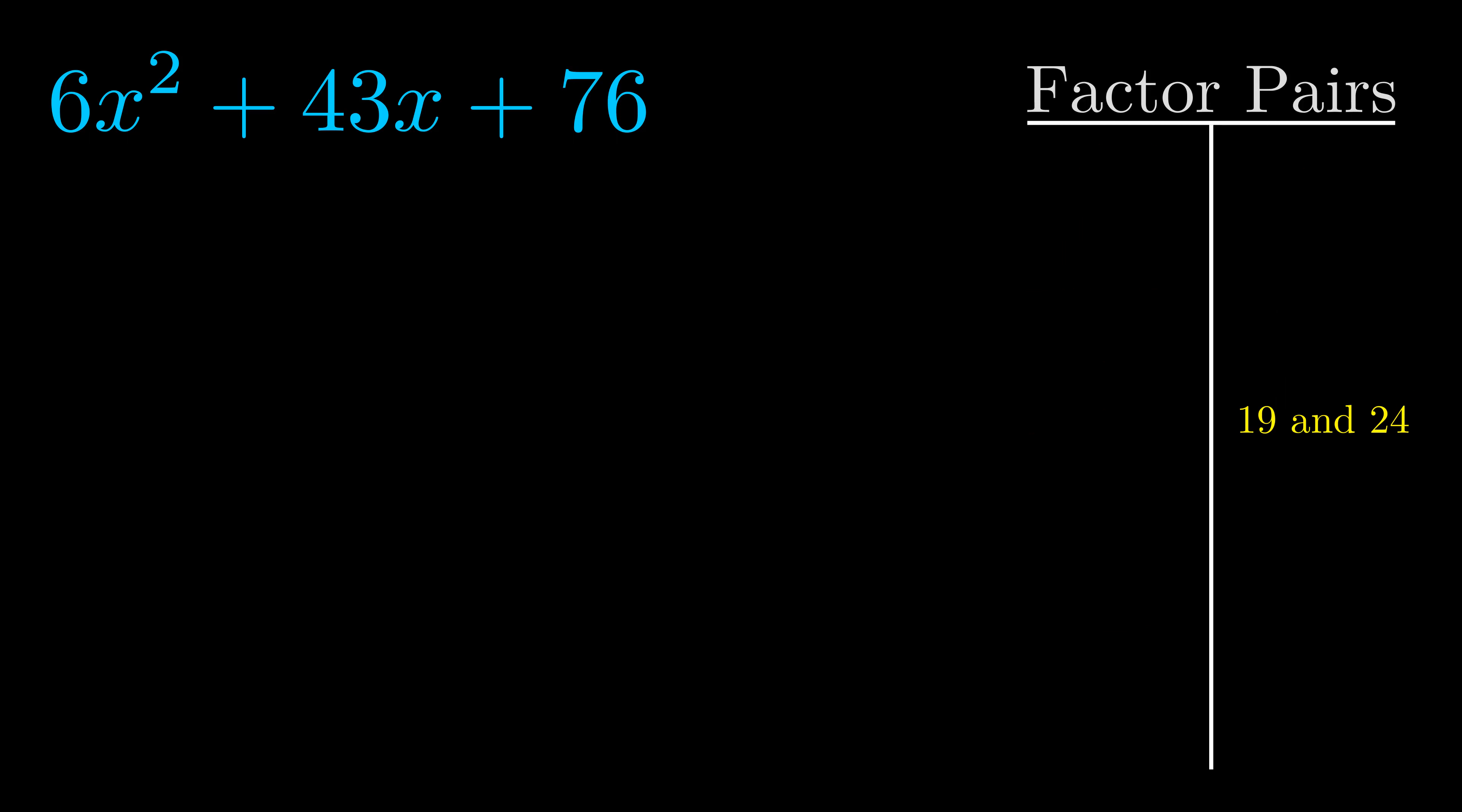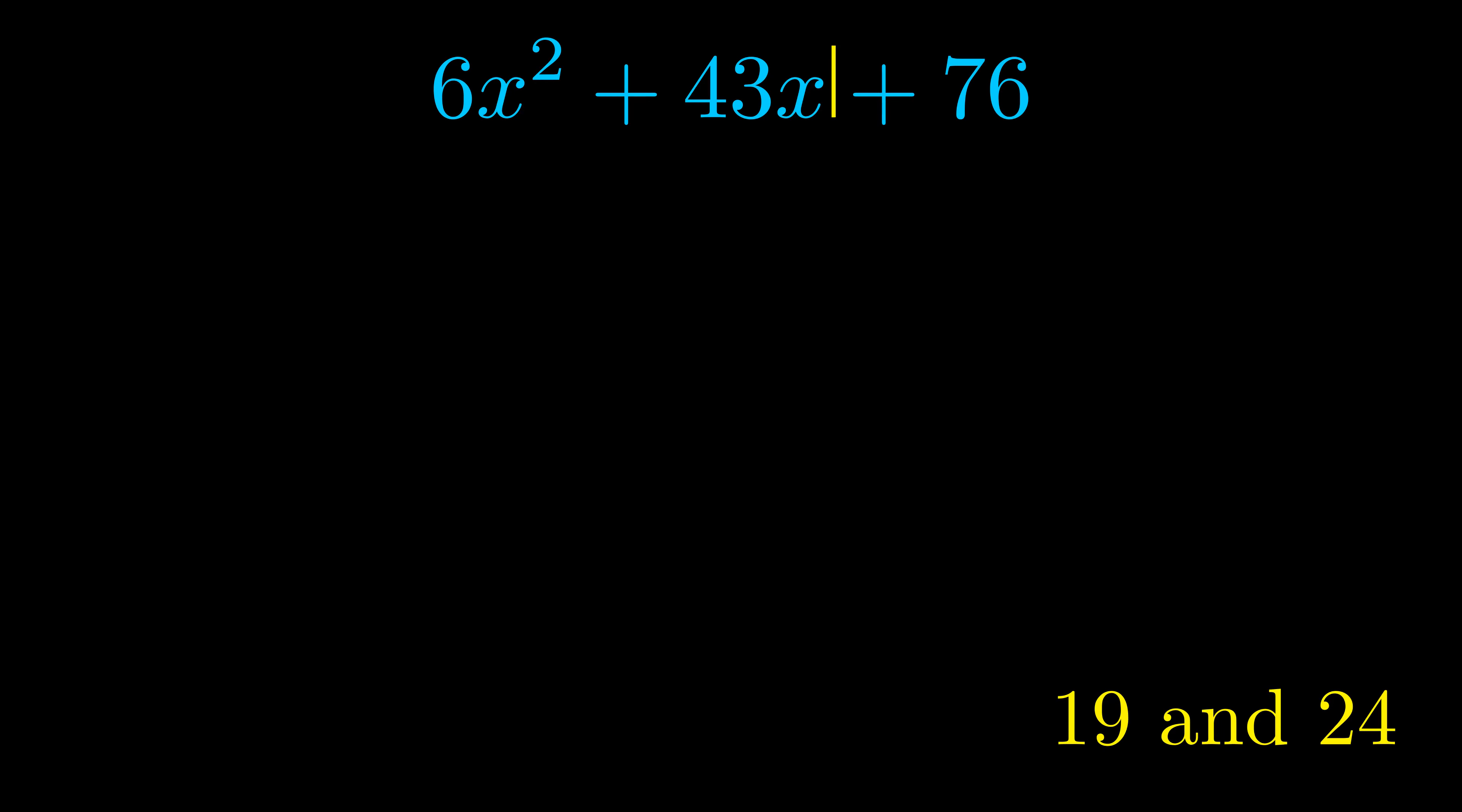Now once we have this factor pair, what we want to do is use it to split up the b value. Notice how I'm going to keep my first term and my last term completely unchanged. It is only this b term highlighted in yellow that gets expanded into this correct factor pair.